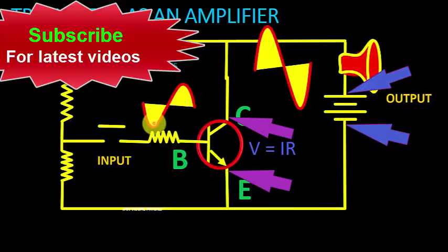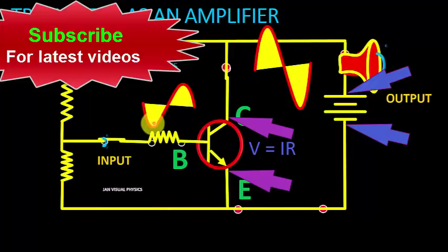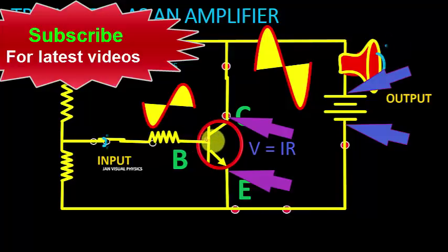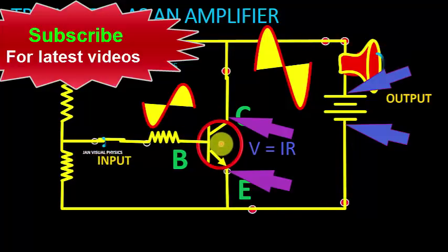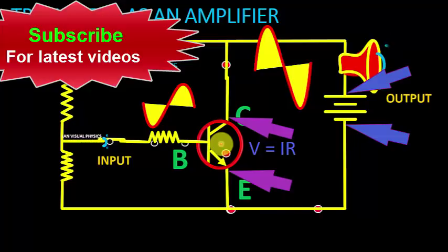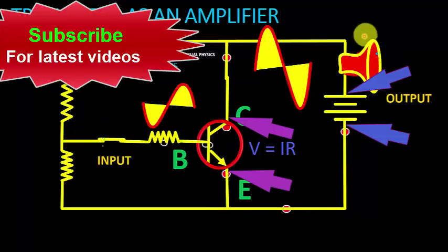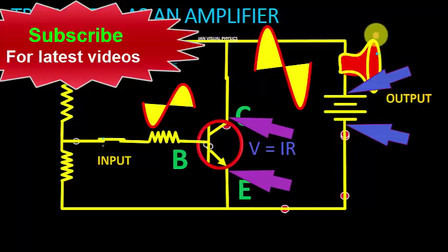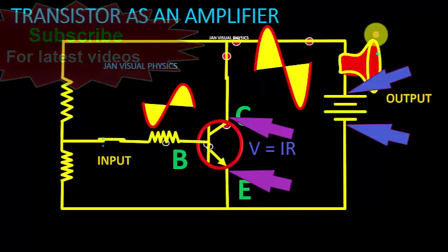When a small signal is applied at the base of the transistor, then what happens inside the transistor — we shall see the anatomy of the transistor in a separate video. Just click the card on this video.